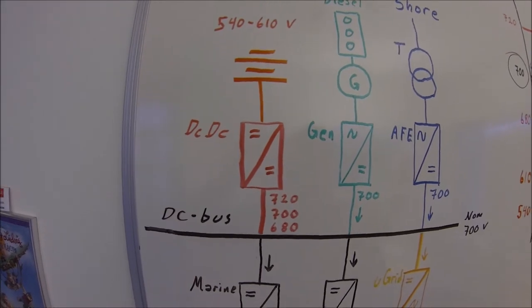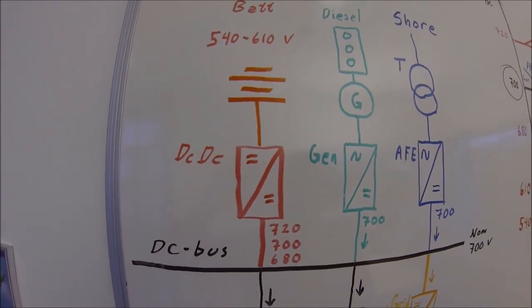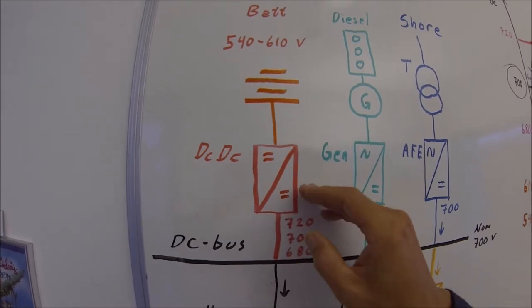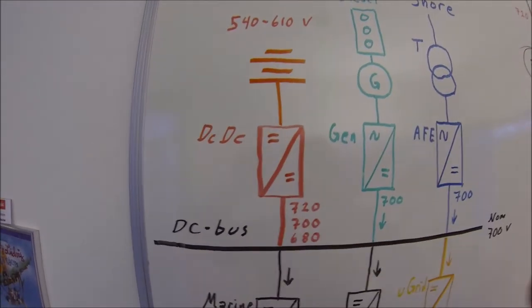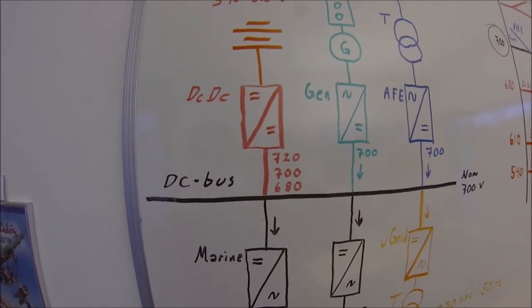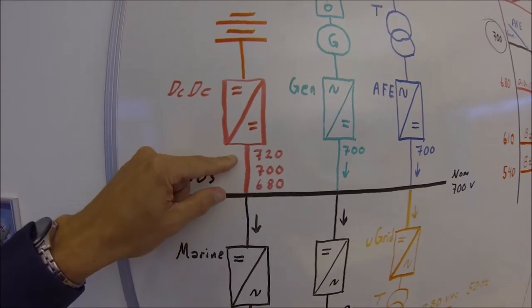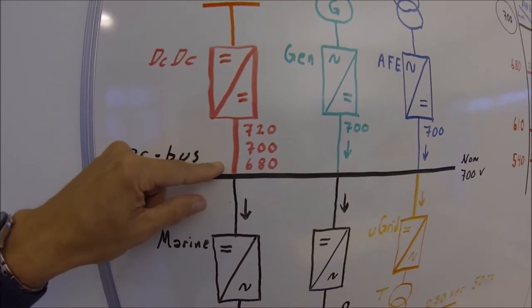Then the DC-DC converter. Usually it's run in our base current reference mode so that there is a power management controlling the battery. However, we want very fast response into the DC bus, so we let the DC-DC converter be controlled by the over-voltage controller and the under-voltage controller.